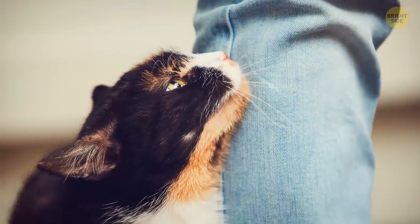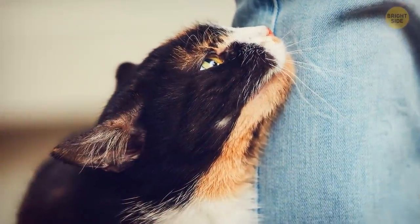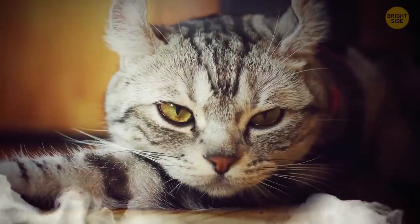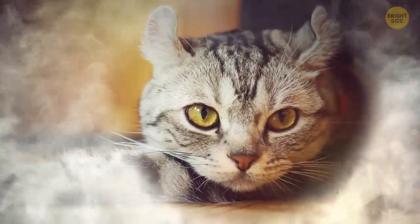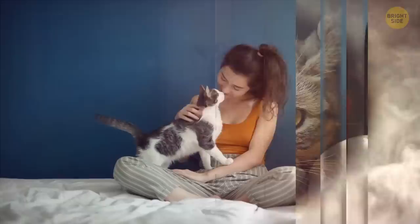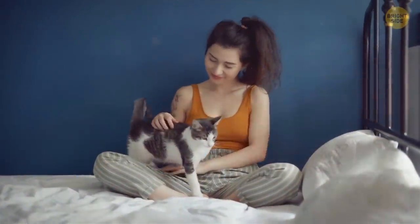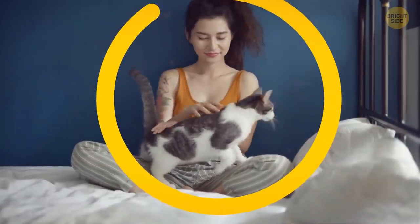Cats often rub their bodies against your legs, but do you know why they do it? This way, they transfer their scent to you, marking you as their territory and as their human. It's also a sign of affection. By doing this, they show that you're part of their inner circle.